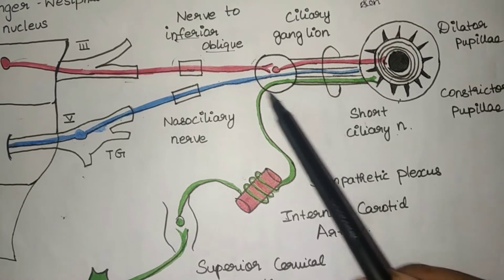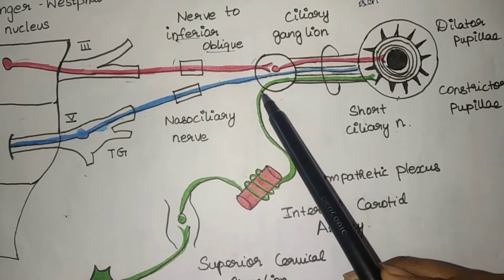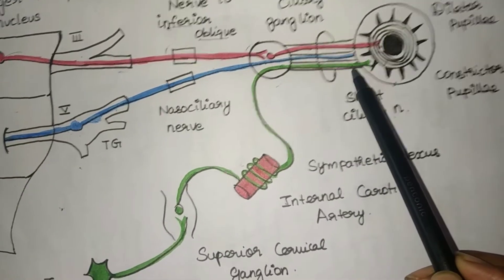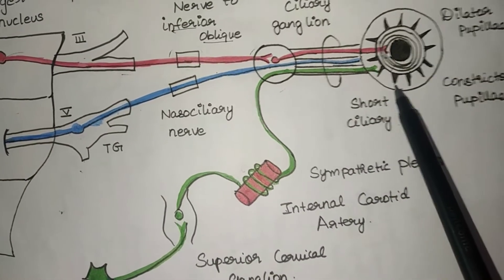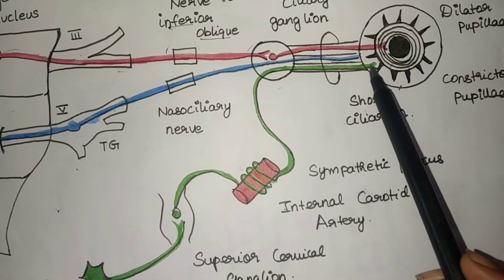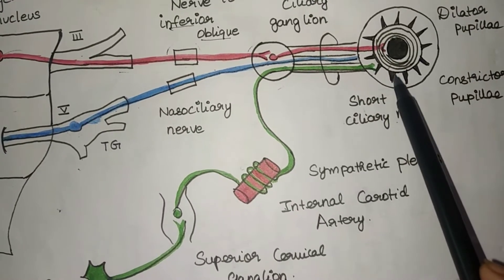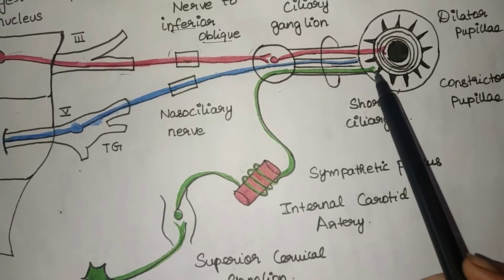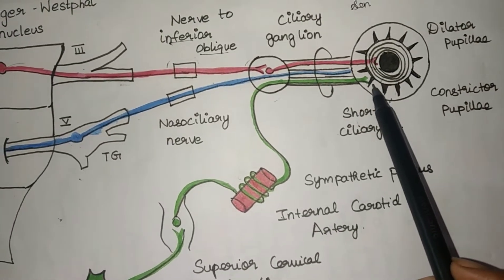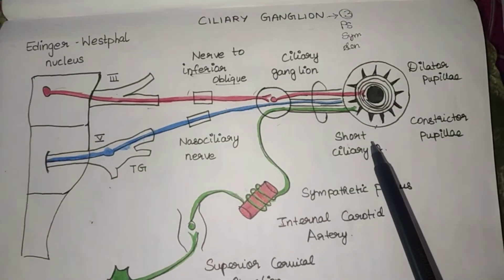In this ciliary ganglion, the short ciliary nerve continues to supply the dilator pupillae muscle. This dilator pupillae muscle helps in the dilatation of the pupil. This completes the ciliary ganglion root pathways.